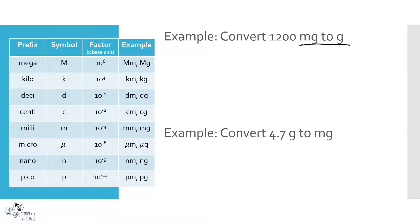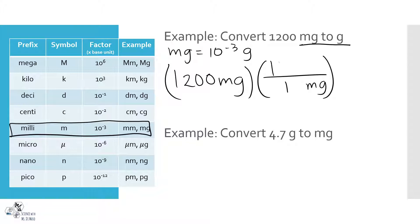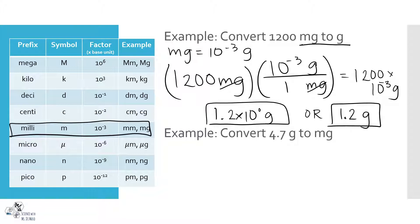Converting milligrams to grams: milligrams equals 10 to the negative third grams. I have 1,200 milligrams to convert, so I put milligrams on the bottom and grams on the top. That gives me 1,200 times 10 to the negative third grams, which simplifies to 1.2 times 10 to the 0 grams — in scientific notation — but in this case it was probably simpler to just write 1.2 grams.